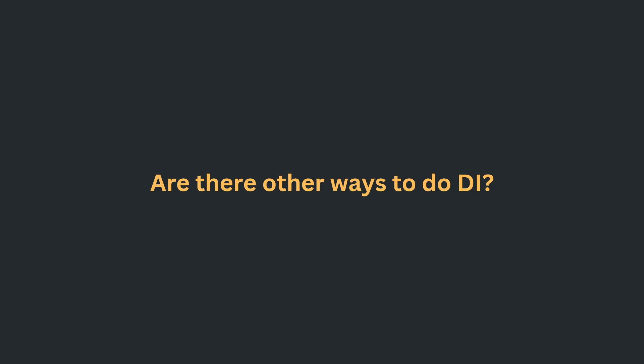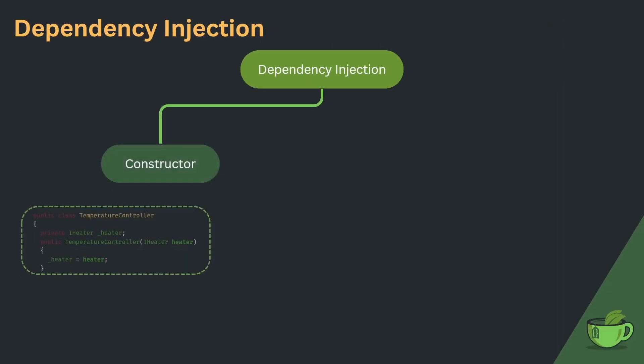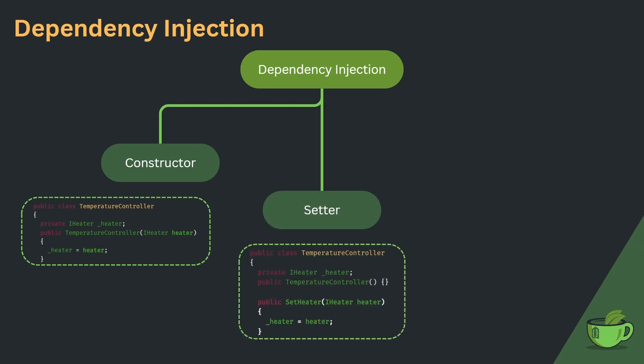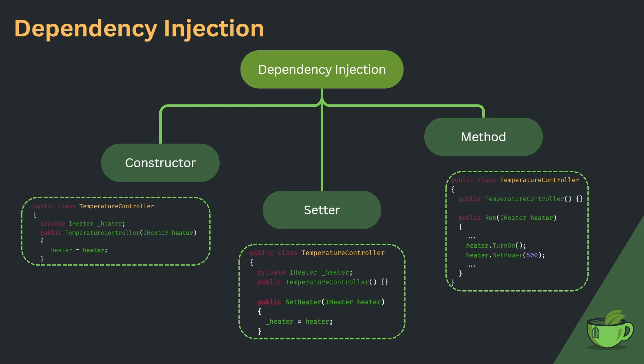You can learn two more ways of doing dependency injection. What we just did is called constructor injection, where the dependencies are provided via parameters of a constructor call. If you want more flexibility at runtime, you can do setter injection — like this, you can switch the dependency any time. Note that the heater member can be null before the setter is called, so you could combine constructor and setter injection. Last but not least, there's method injection: if you don't need to store a dependency as a member, inject it as a parameter into a method which locally uses it.